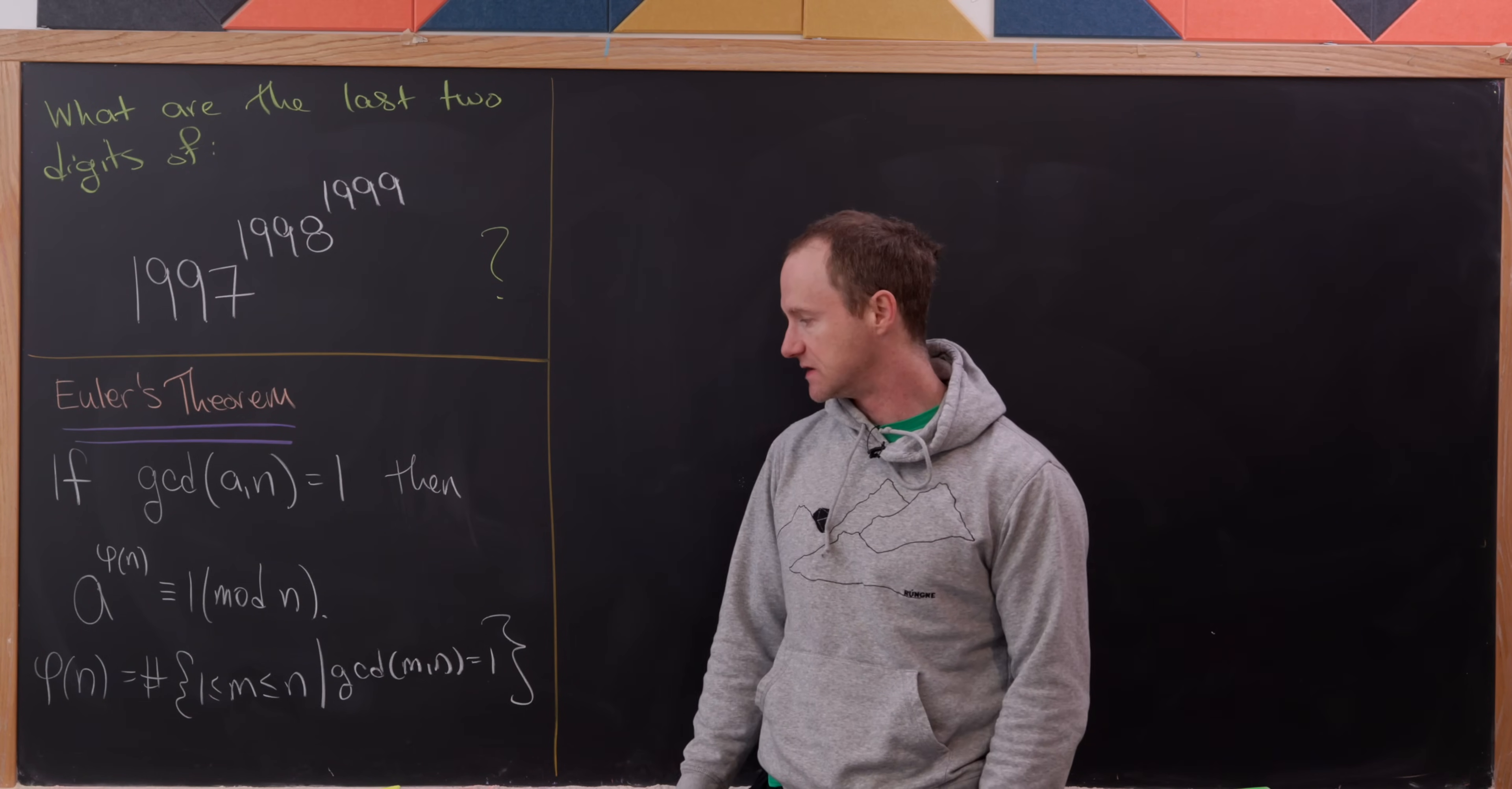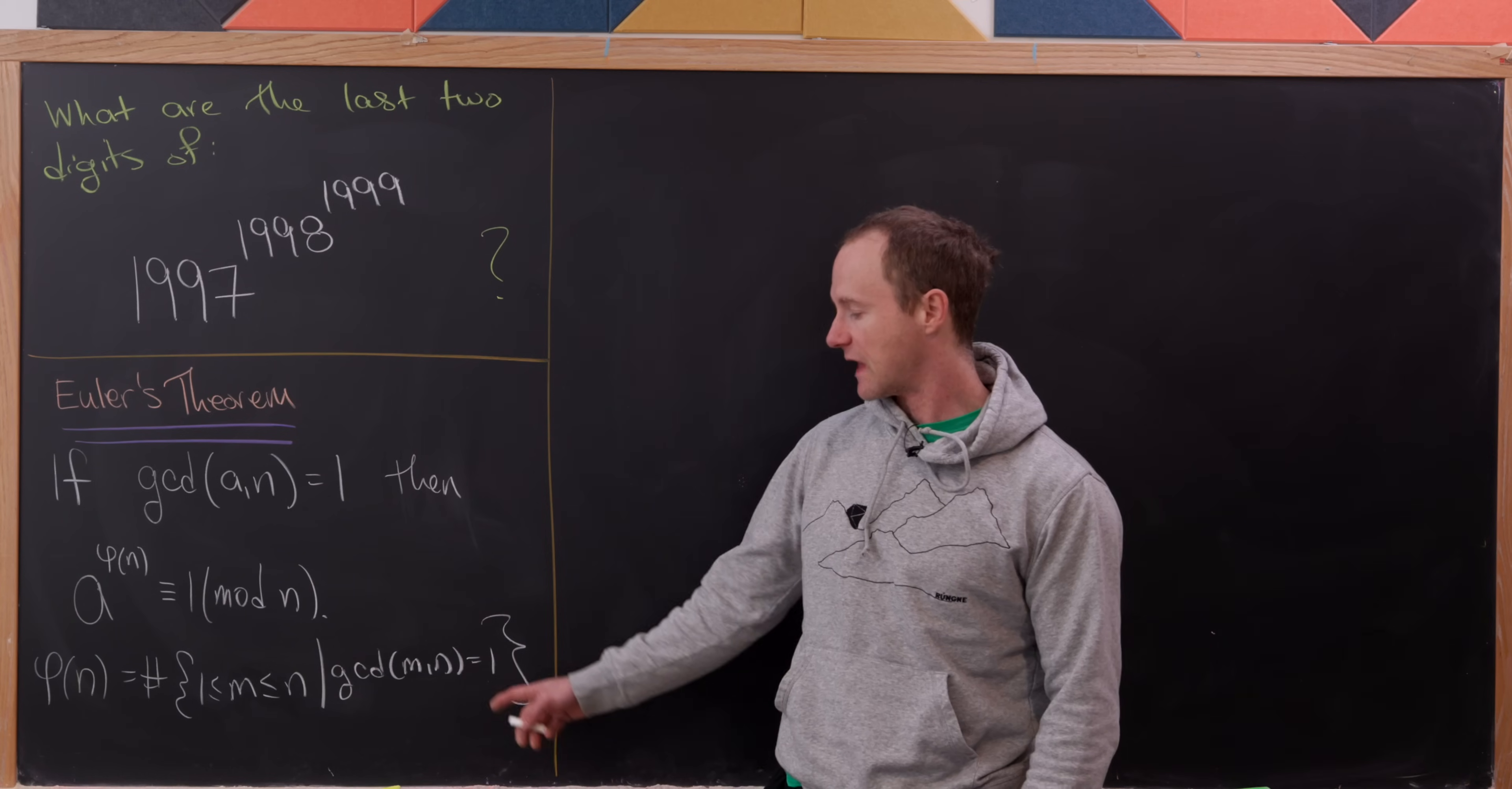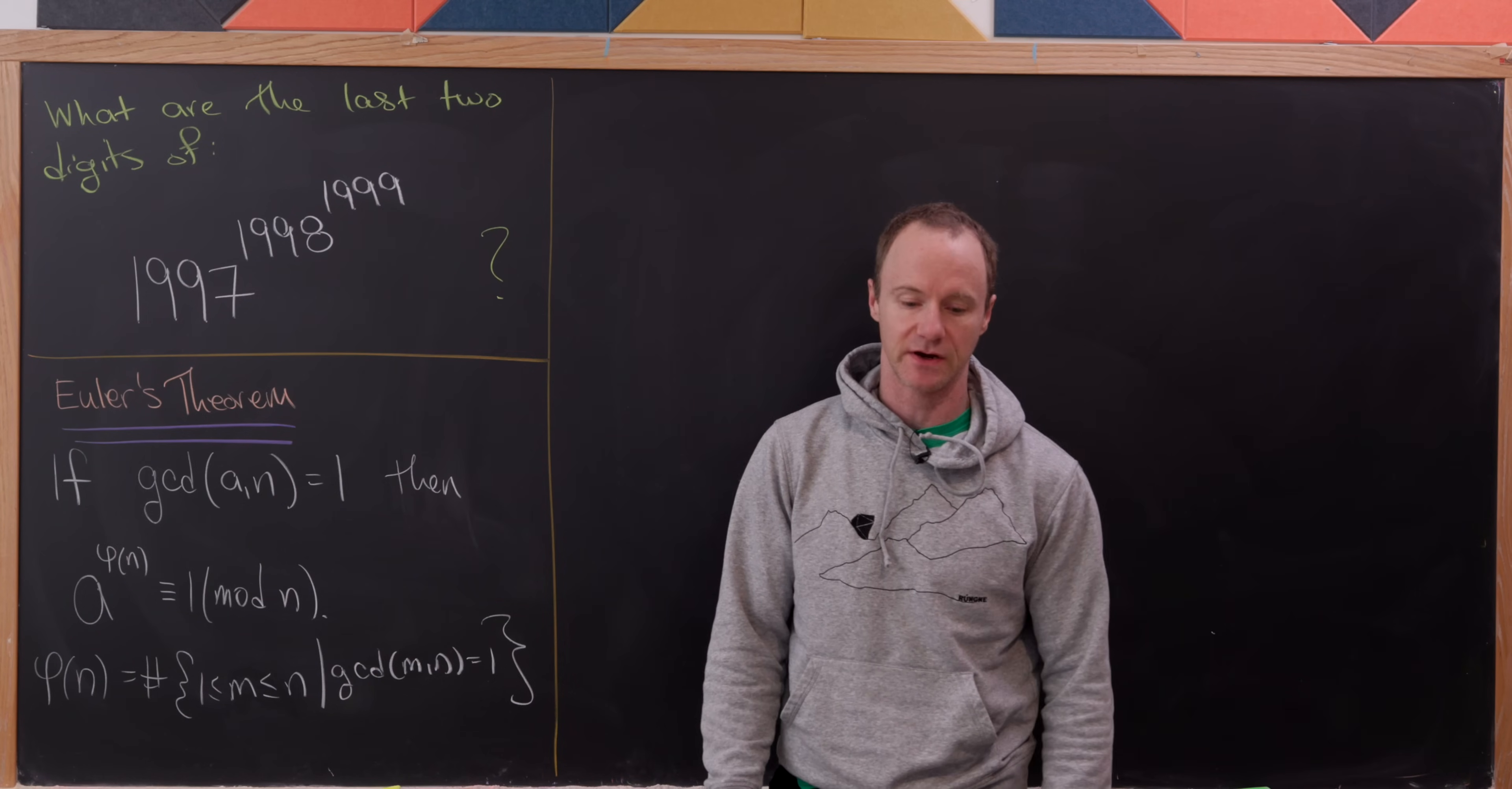φ(n) is the number of numbers between 1 and n that are relatively prime to n. I've written that in set notation down here.